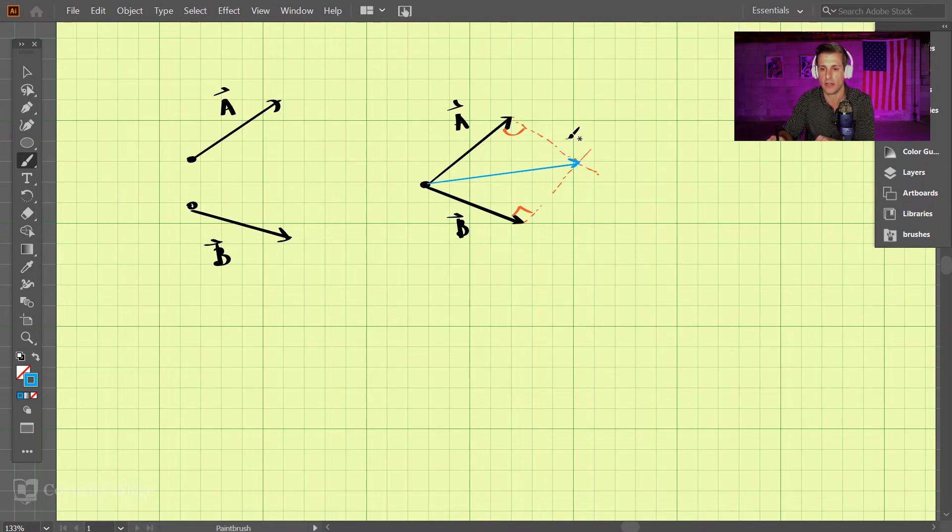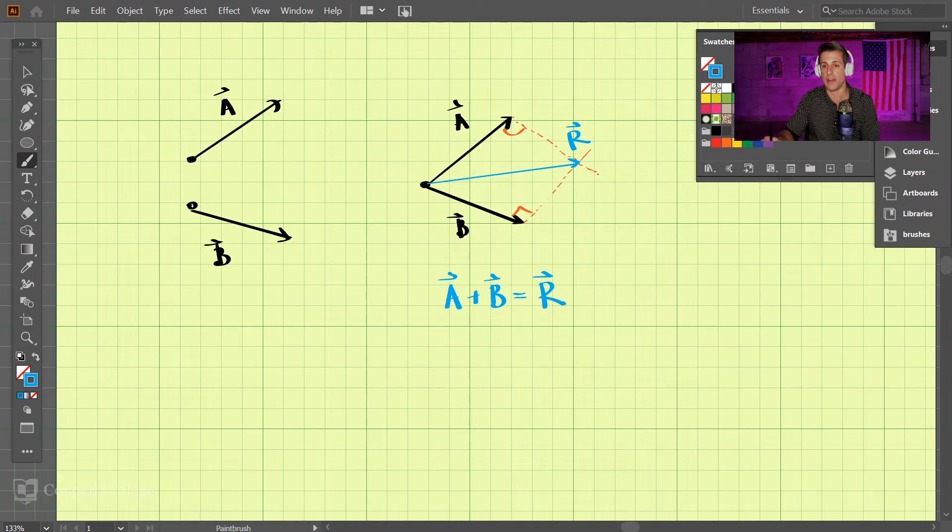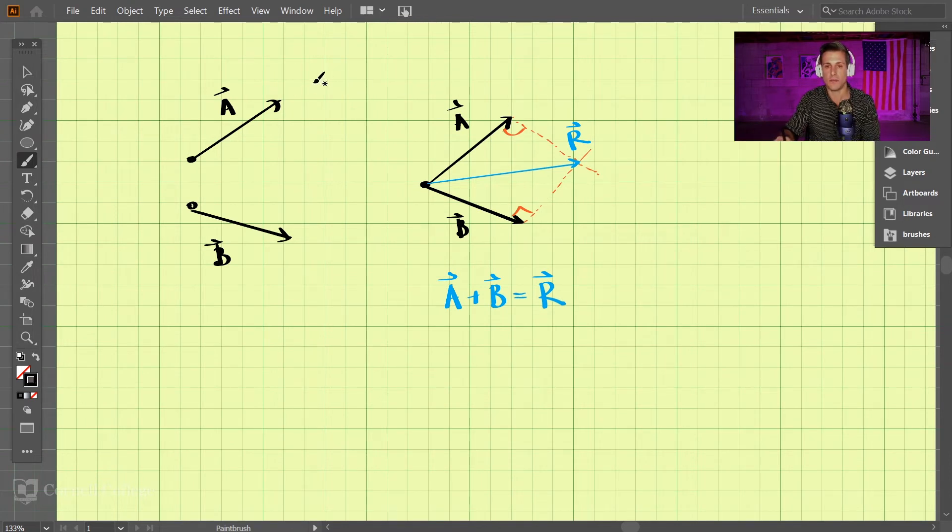So that represents A plus B. A plus B equals our resultant vector. So that's the first method that we can add vectors, and that can be thought of as the parallelogram method.